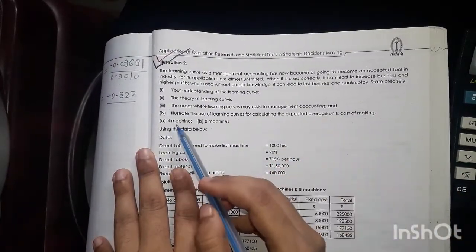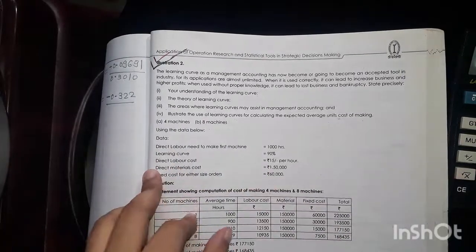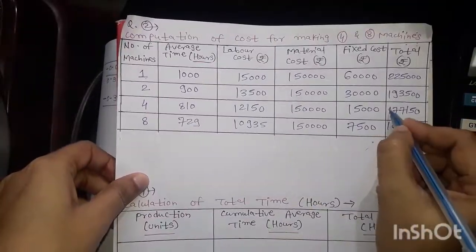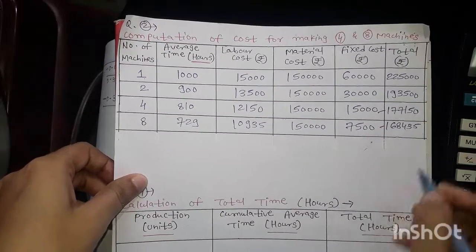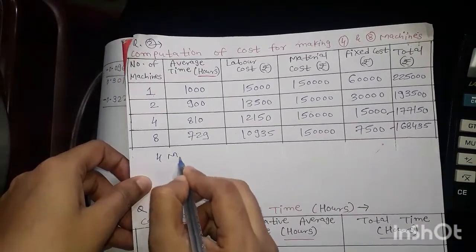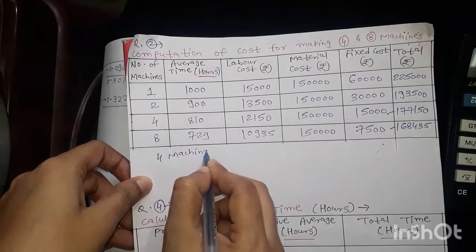So this is for four machines. And this is for eight machines. Four machines.